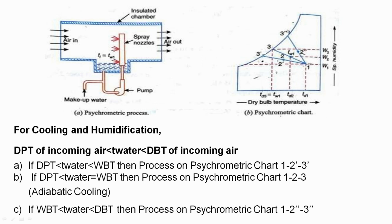The second process is when DPT < T_water and T_water equals the wet bulb temperature. When these two temperatures are equal, the process is called adiabatic cooling, in which enthalpy remains constant throughout the process from point one to three. The third condition is when WBT < T_water < DBT, and this third process line follows accordingly. These three conditions represent the examples of cooling and humidification.